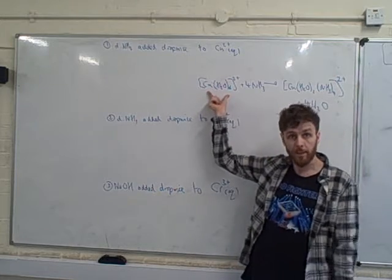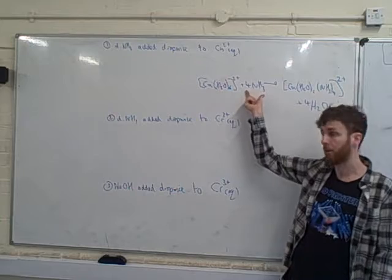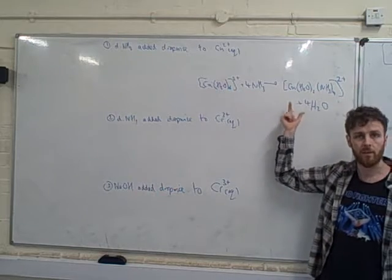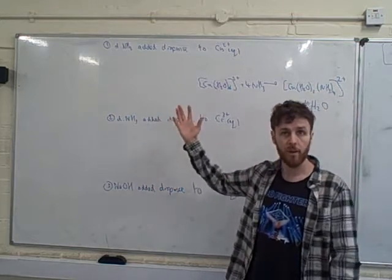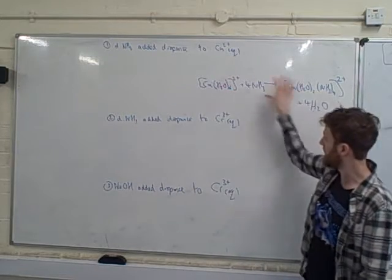If we just dumped a gigaton of ammonia in, what we'd get is just a straight up ligand substitution. Four of the waters, we'd swap for four of the ammonias, and we'd get this. So if we added an excess of ammonia, or conc ammonia, words to that effect, dead simple, one step equation.